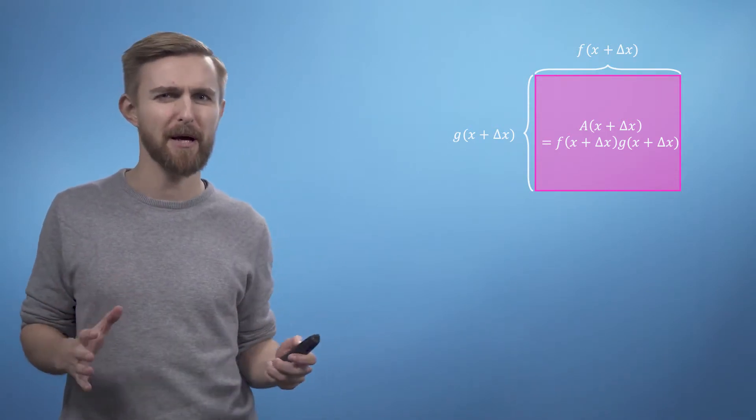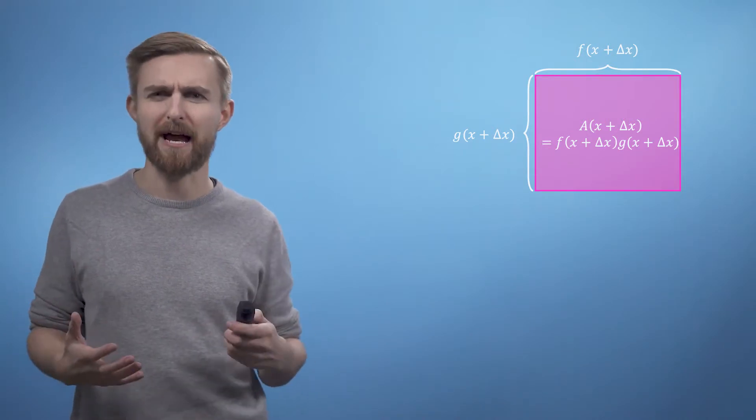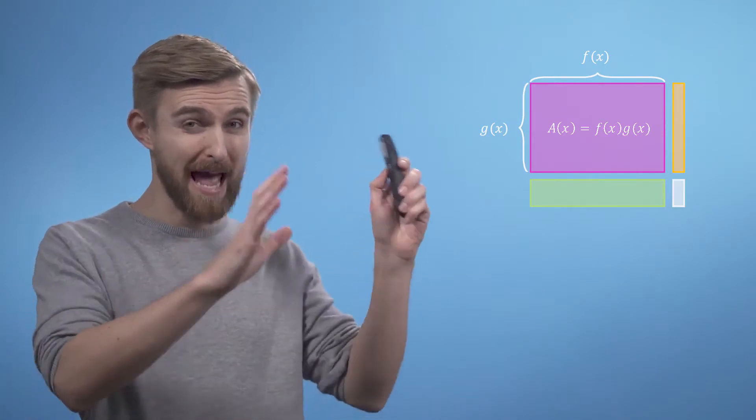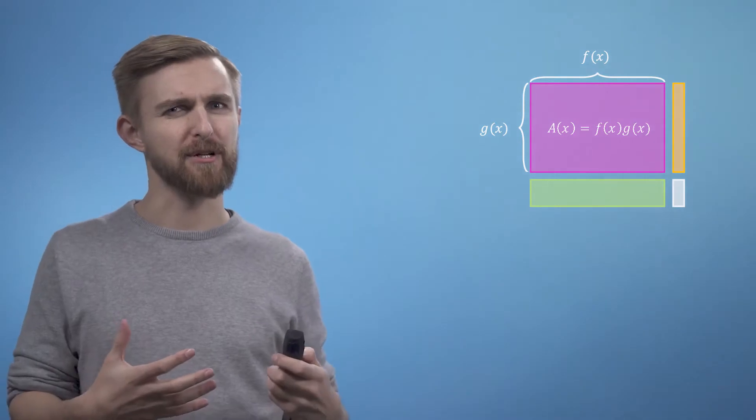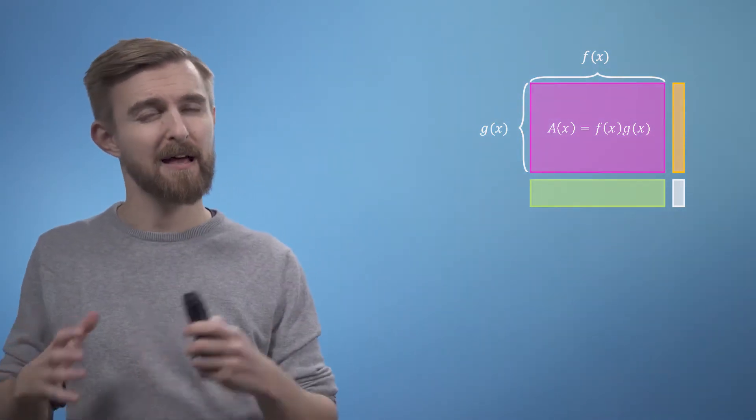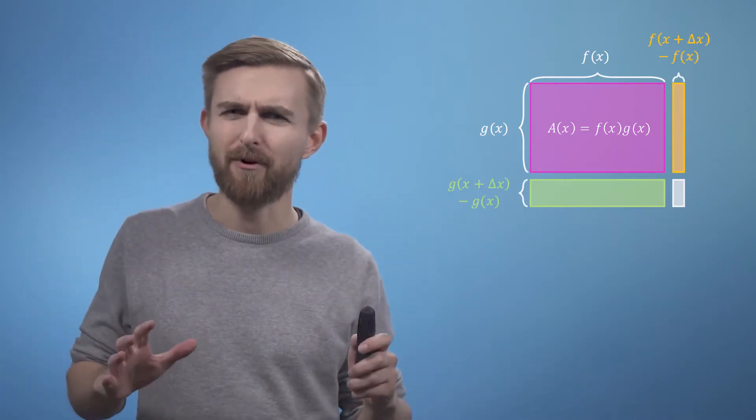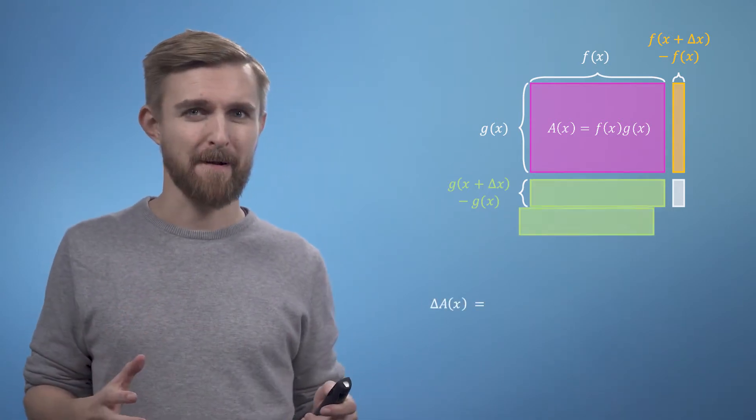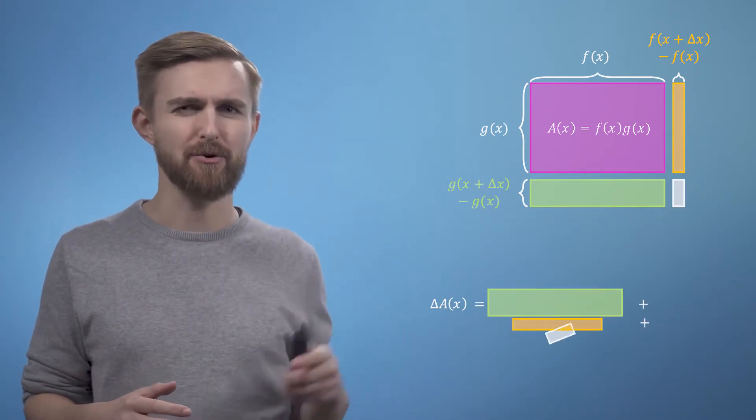We can now divide up our rectangle into four regions, one of which was our original area, a. As the total edge length along the top is now f plus delta x, this means that the width of the new region must be the difference between the original width and the new width. And of course the same logic applies to the height. We can now write an expression for just the extra area, which we will call delta a. This is the sum of the area of the three new rectangles.